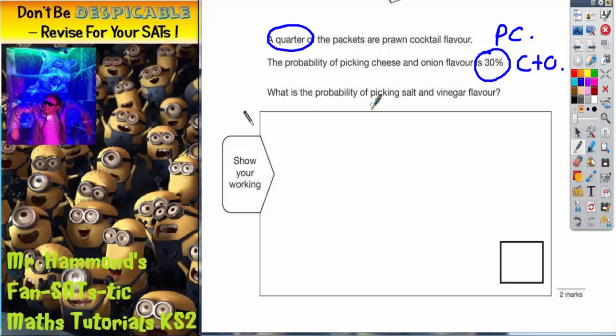What is the probability of picking salt and vinegar? Salt and vinegar we'll call S and V for short. Well, let's have a look at what we've got so far.